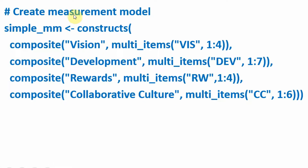The next step is to specify our measurement model. Here is an object — the function is called and the data is stored in the object. Here you are specifying your measurement model, and that measurement model is stored in an object named simple_MM for measurement model. In a model, we have different constructs. Now, what is this composite? This is again your construct.